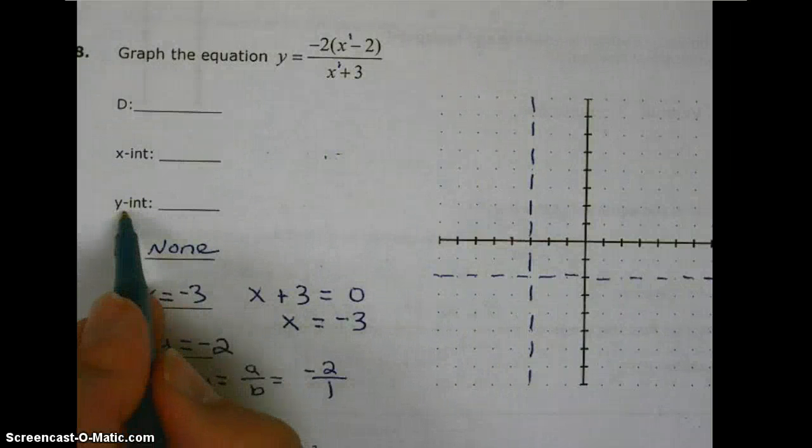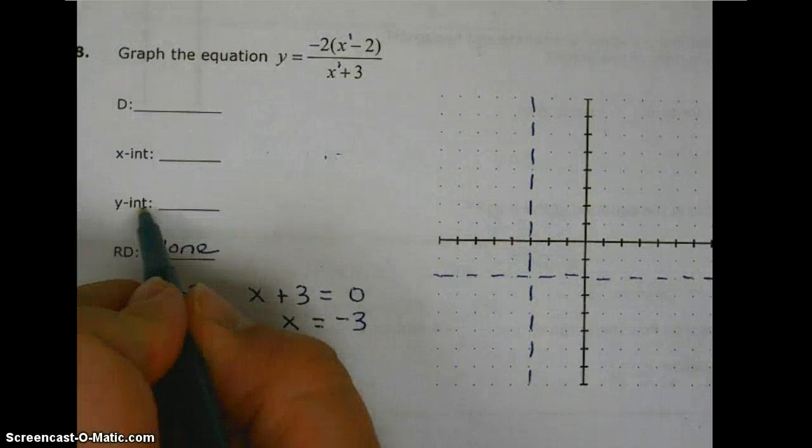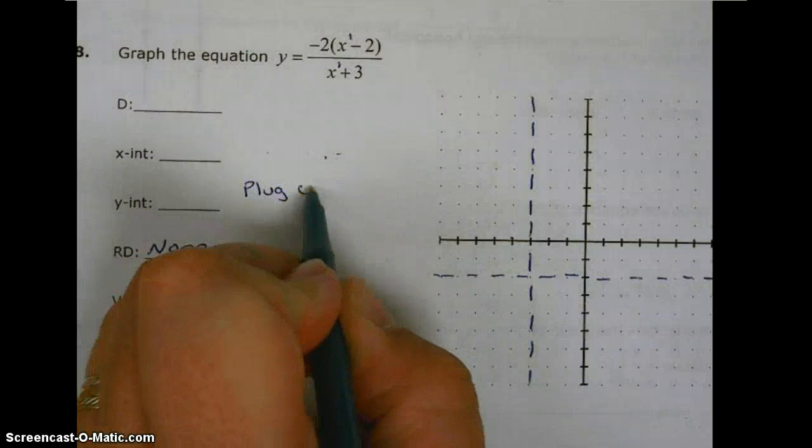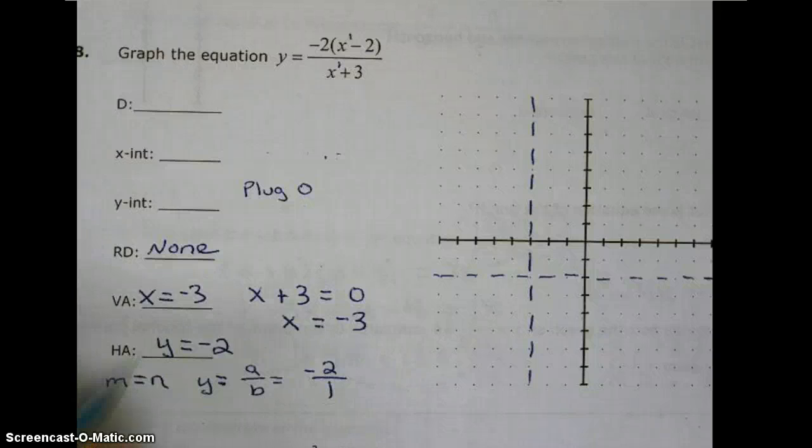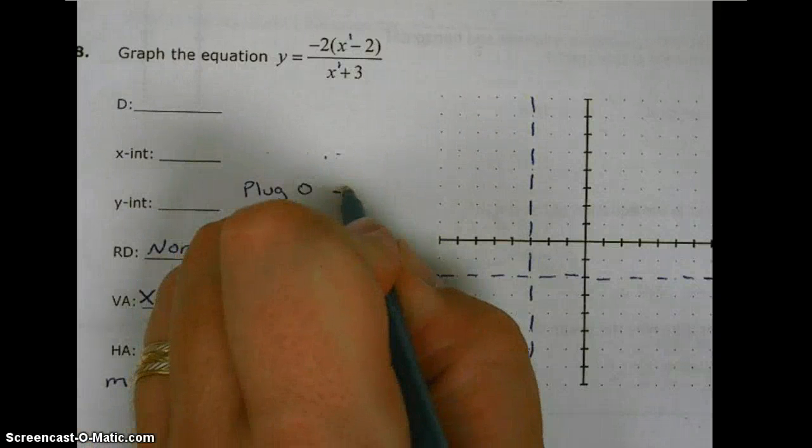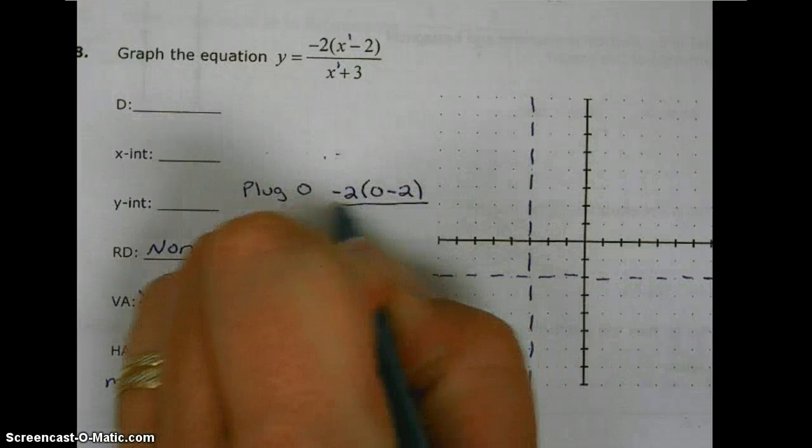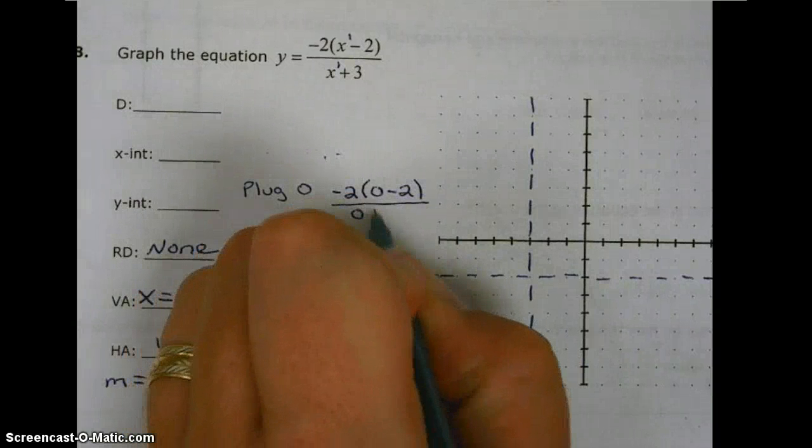Now, finding the y-intercept, we plug 0 into the function. So we get negative 2 times 0 minus 2 over 0 plus 3.